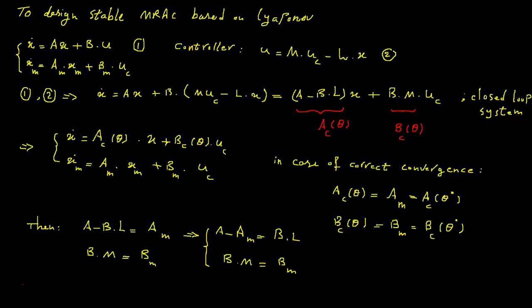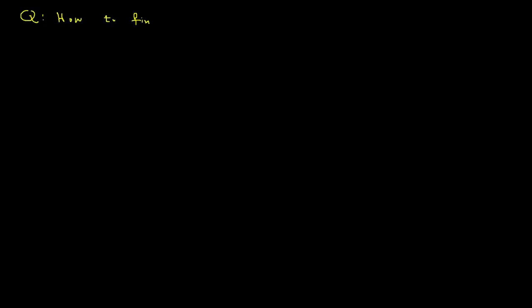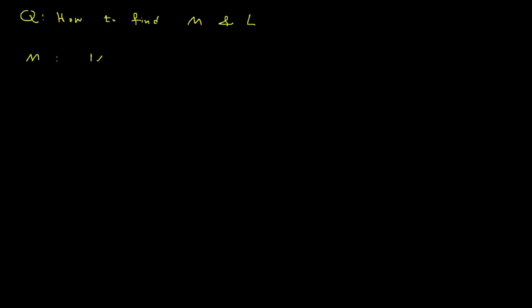Based on these equalities we need to determine the controller unknown matrix L and the scalar m. It is noted that we assume the system to be single input single output, specifically in the predicted control model.